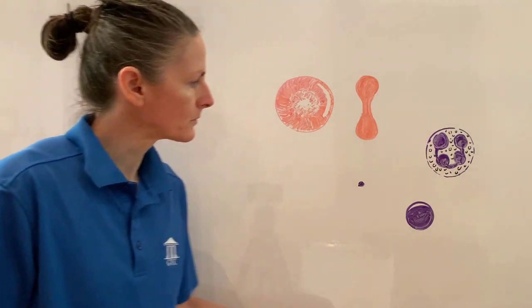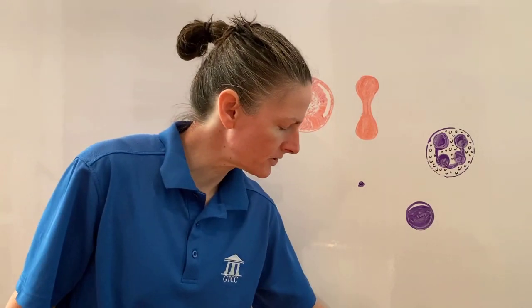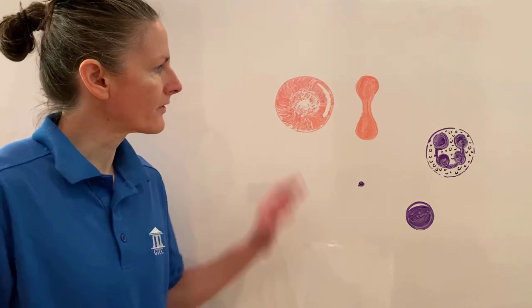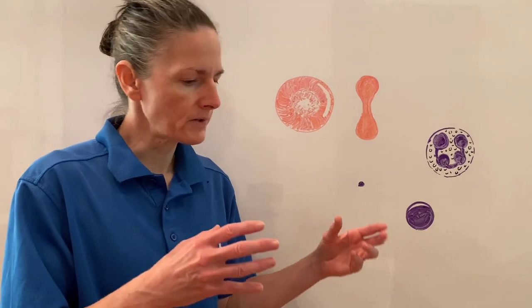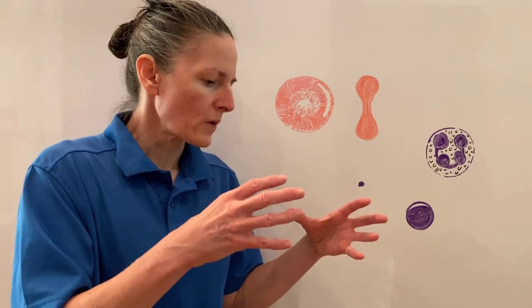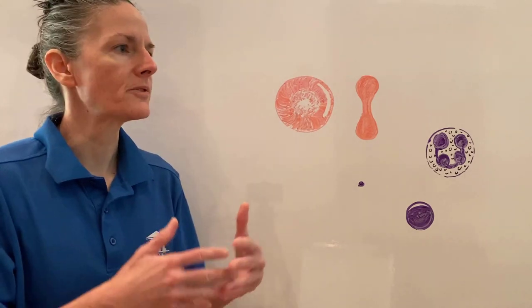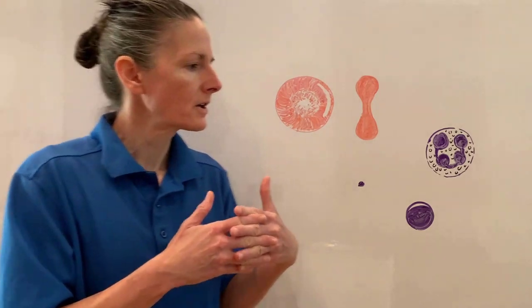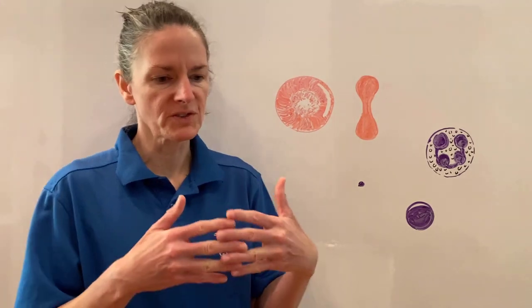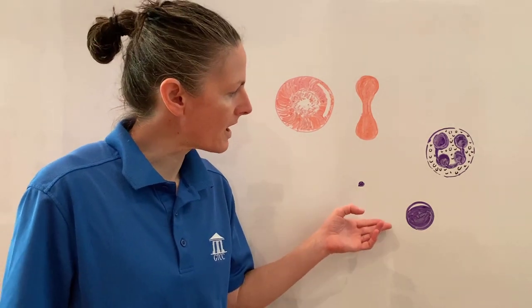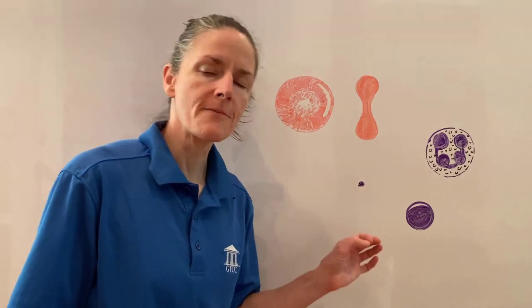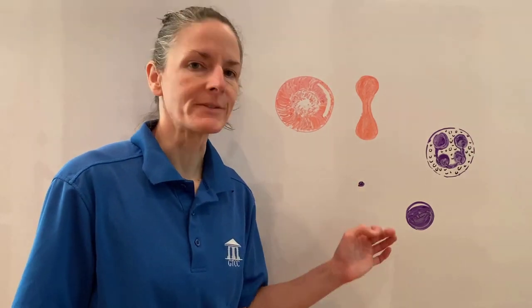Now let's look at blood, which is a specialized fluid connective tissue that consists of formed elements and the matrix. The matrix, as you recall, is the ground substance and all the proteins that make up the backdrop of connective tissues. In fluid connective tissues like blood, it's a very watery substance, and we have a special name for it — we call it plasma.